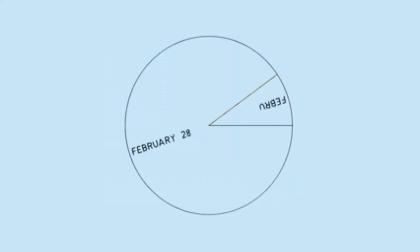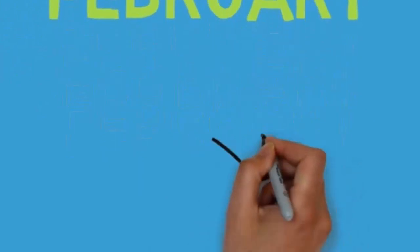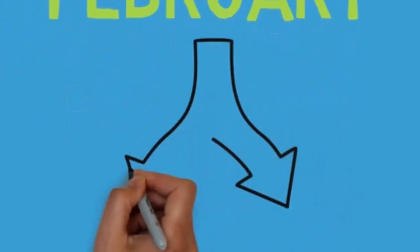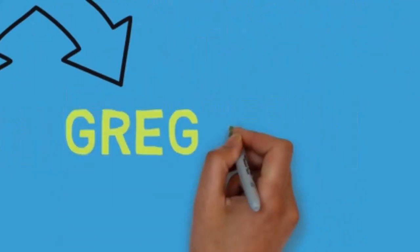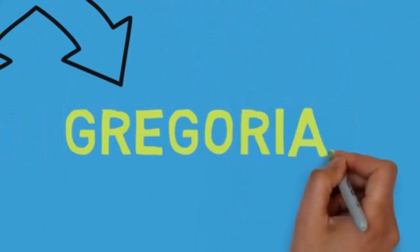At higit sa lahat, kung bakit naglalaman lang ito ng 28 days at 29 days naman kapag leap year. Ang Pebrero ang ikalawang buwan ng taon sa kalendaryong Gregorian at ng kalendaryong Julian. Merong 28 o 29 na araw ito depende kung ang taon ay leap year ba o hindi.